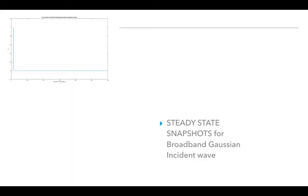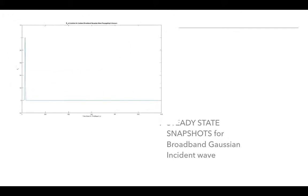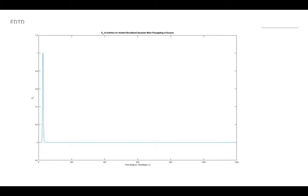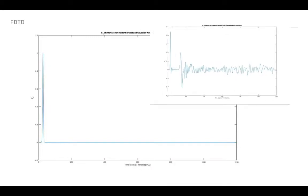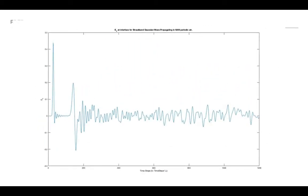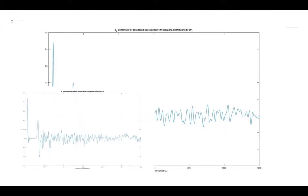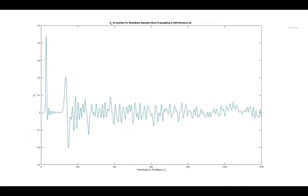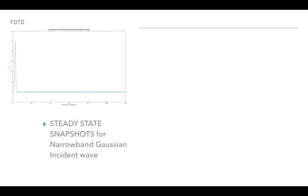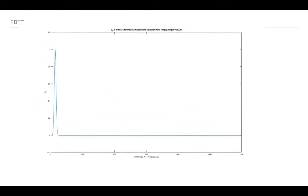Now let's look at the steady state snapshots for the broadband Gaussian incident wave. This is the output of the FDD code with just the undisturbed Gaussian wave traveling. Then we bring in the periodic NAN structure and see all the reflections, and then we see the Fibonacci NAN structure. We also have the steady state snapshot for the narrowband Gaussian wave, where the increased spread is clearly visible.